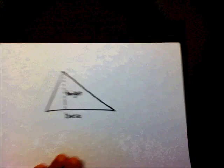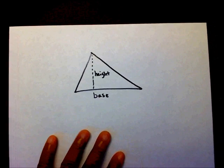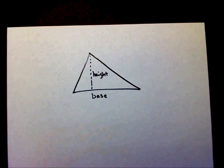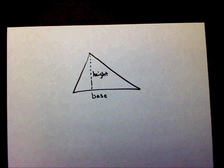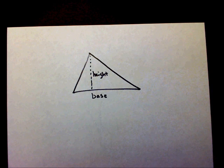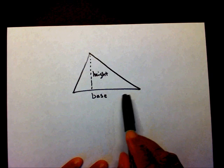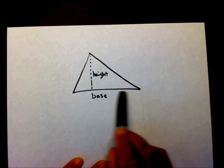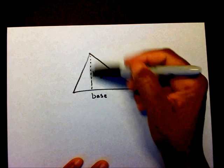First, let's talk about what is a triangle. A triangle is a shape that consists of three sides. A triangle has a base and it also has a height.